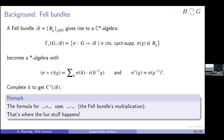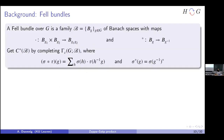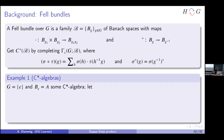A Fell bundle is a collection of Banach spaces with multiplication and involution, from whose sections I can make a C*-algebra via a convolution product and involution. Now for the examples — why should you care? If I start with the trivial group and take a C*-algebra as the bundle, with C*-multiplication and C*-involution, this is a Fell bundle. The sections are just the algebra itself, and its C*-algebra is just the C*-algebra. So a C*-algebra is a particular example of a Fell bundle.